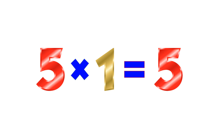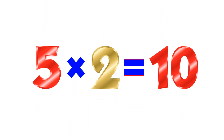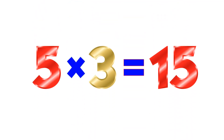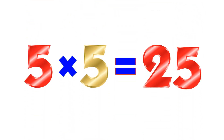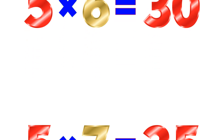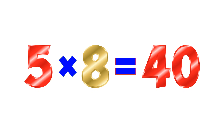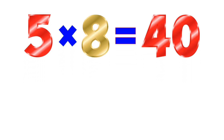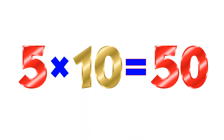Table of 5. 5×1=5. 5×2=10. 5×3=15. 5×4=20. 5×5=25. 5×6=30. 5×7=35. 5×8=40. 5×9=45. 5×10=50.